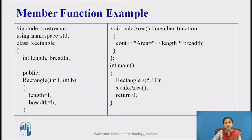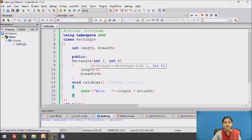When a member function is called, an implicit argument is automatically passed, which is a pointer to the invoking object — that is, a pointer to the object on which the function is called. Let's see a program of member function in the Code Blocks IDE.